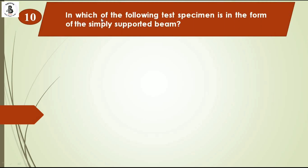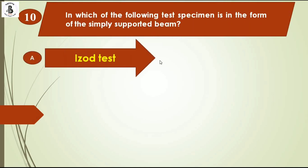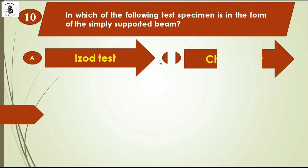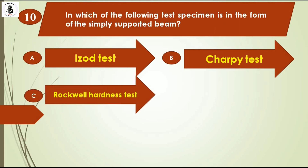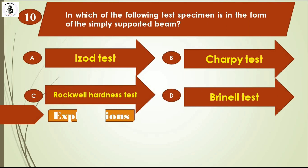In which of the following tests is the specimen in the form of a simply supported beam? Option A isotropy test, option B Charpy test, option C Rockwell hardness test, option D Brinell test. In the Charpy test, a simply supported beam specimen is used. So the right answer is option B, Charpy test.